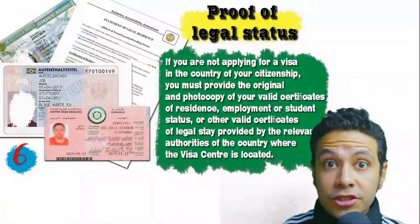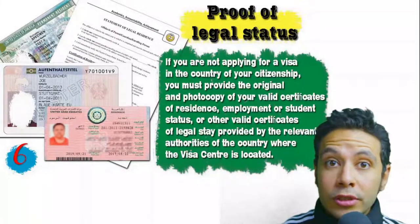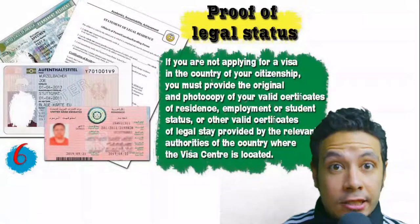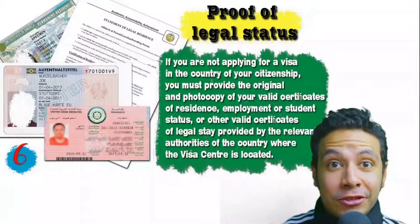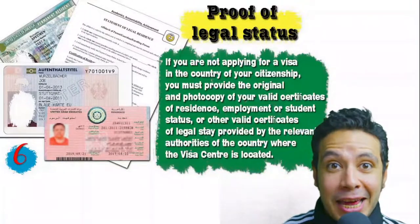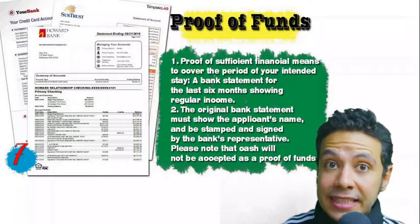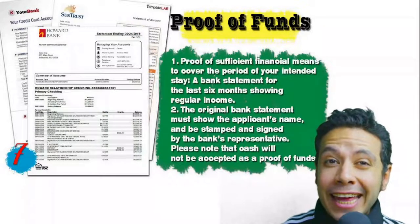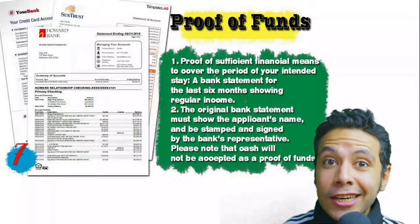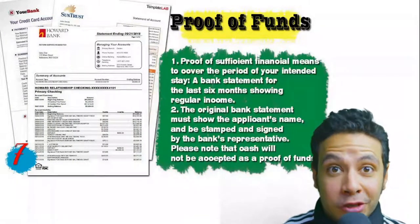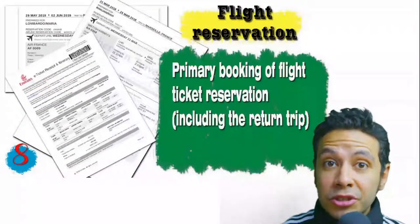If you are applying from a country different from your own, you will need to provide proof of legal residence in that country — a certificate of legal residence, or in some cases a valid residence visa may be accepted. You will also need to provide a bank statement showing your balance for at least six months. The original bank statement must show your name and be signed and stamped by a bank representative. Cash will not be accepted as proof of funds.